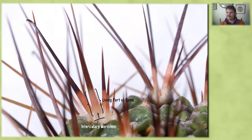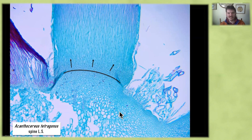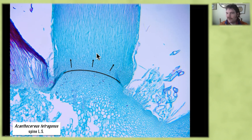Now we'll talk about intercalary meristems. The best example of them in cacti is in the spines. Here we can see a young cactus spine — there's an intercalary meristem in the bottom, creating cells towards the outside, causing this spine to elongate from the base. You can see this freshly grown living part of the spine at the bottom, because this meristem at the base is adding more tissue from the bottom. In a longitudinal section of a similar spine, you can see this area of dense, quickly dividing cells at the bottom that is causing the spine to elongate upwards.